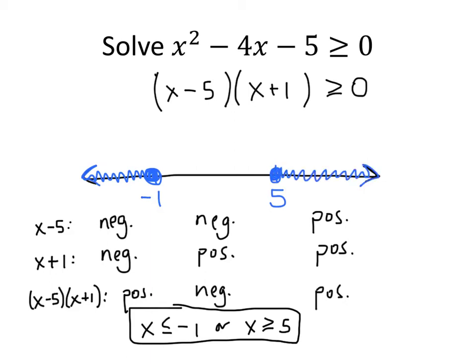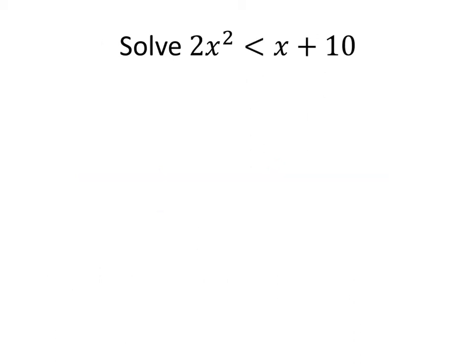So when you can factor the quadratic, that's the process we use. What if we can't factor it? In this case, we have 2x squared less than x plus 10. The first thing we want to do, just like solving a quadratic equation, is get everything to one side: 2x squared minus x minus 10 less than 0.